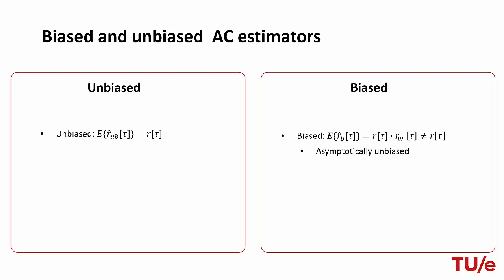The unbiased estimator is unbiased, so its expectation equals the true autocorrelation. In comparison, the biased estimator has a bias equivalent to multiplying the true autocorrelation by a window function. By inverting the normalization of the unbiased estimator, we can see that this window function is actually a triangular or Bartlett window. As a consequence, if we take the limit as N goes to infinity, the biased estimator is asymptotically unbiased.